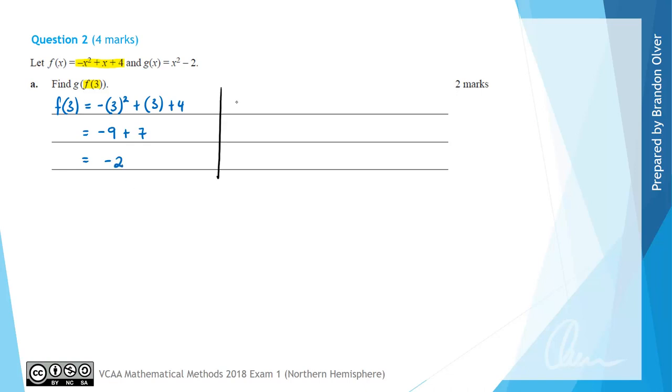Next we're going to consider g(f(3)), however f(3) is simply negative 2 so that's the same as g(negative 2). So that is simply equal to the rule g which is x squared subtract 2 with negative 2 now substituted in, so we'll have negative 2 squared subtract 2, and that's going to equal positive 4 subtract 2 which is positive 2. So 2 is the answer for part a of this question.